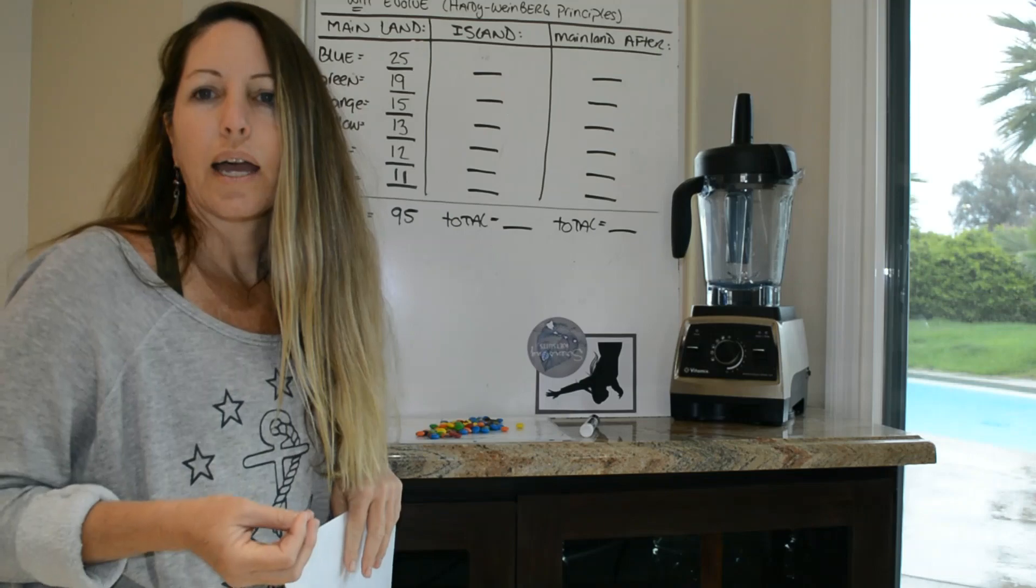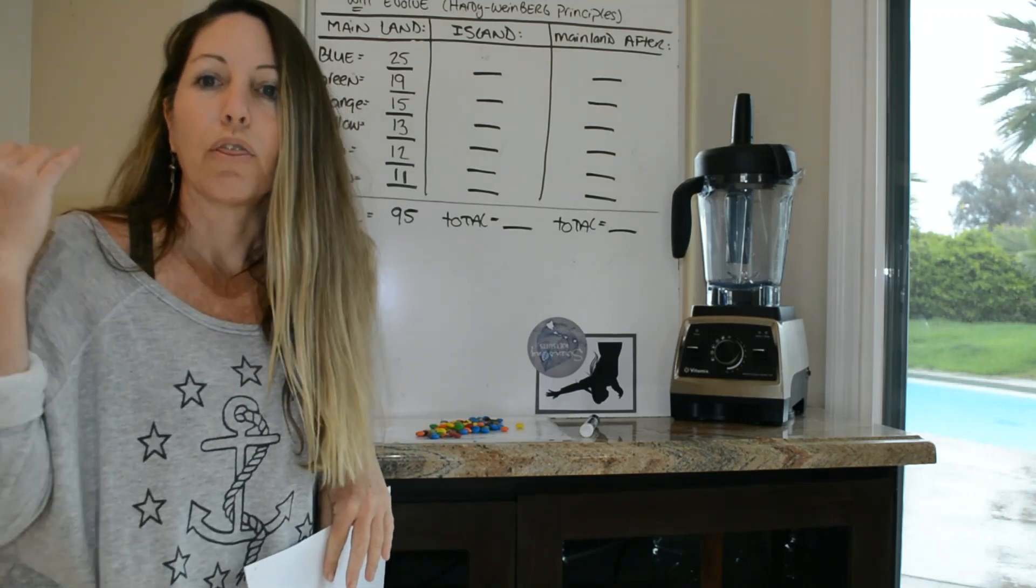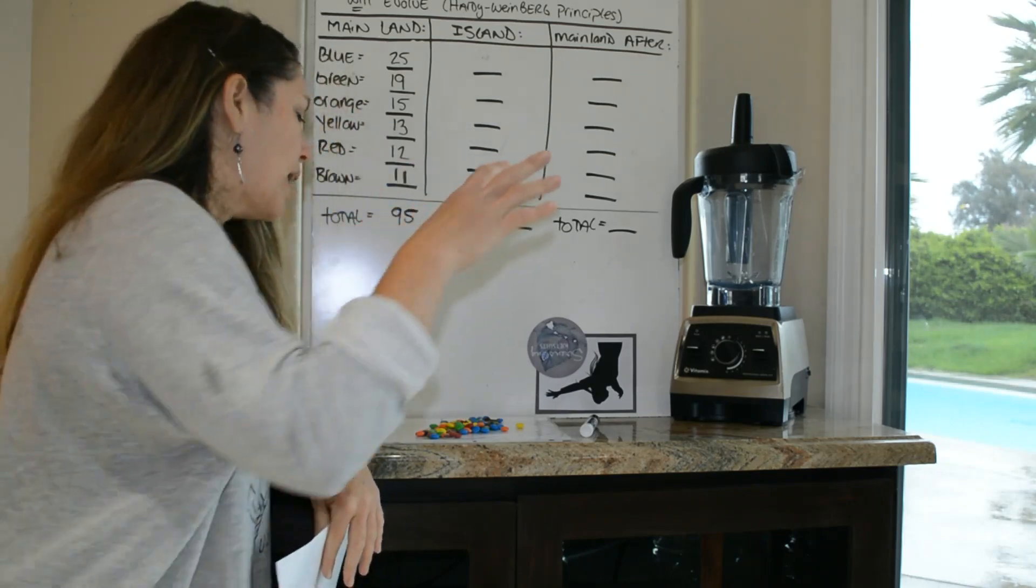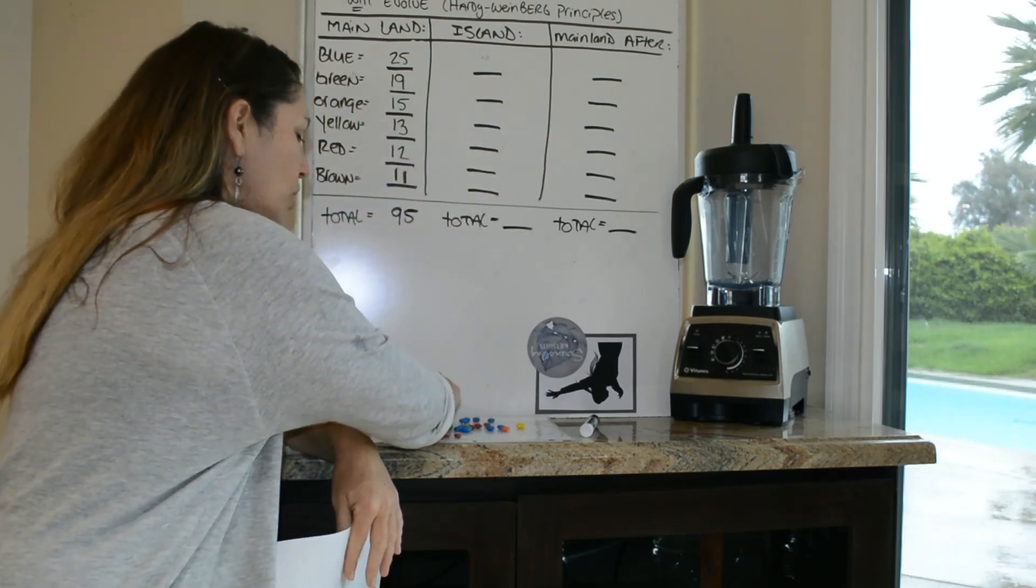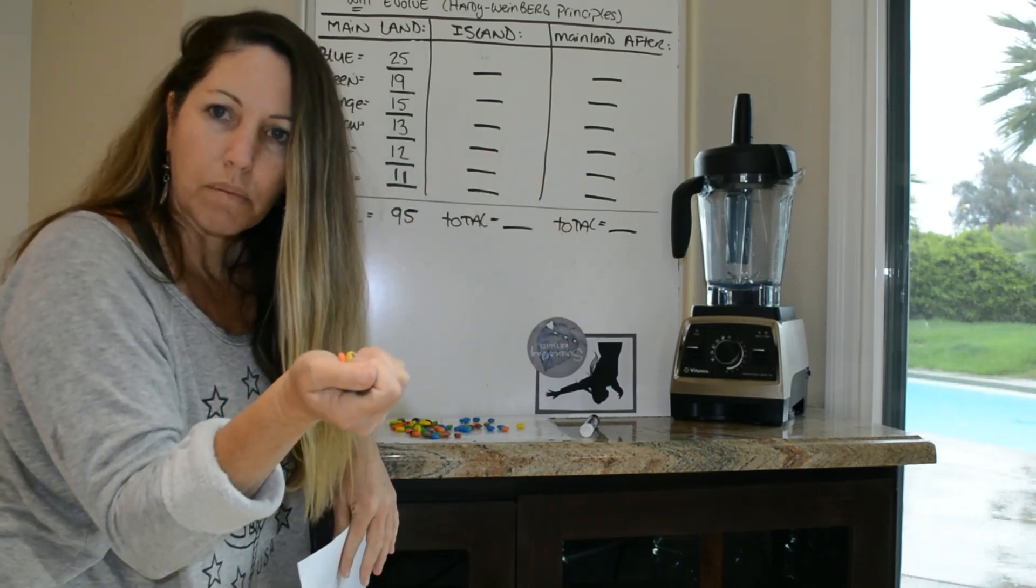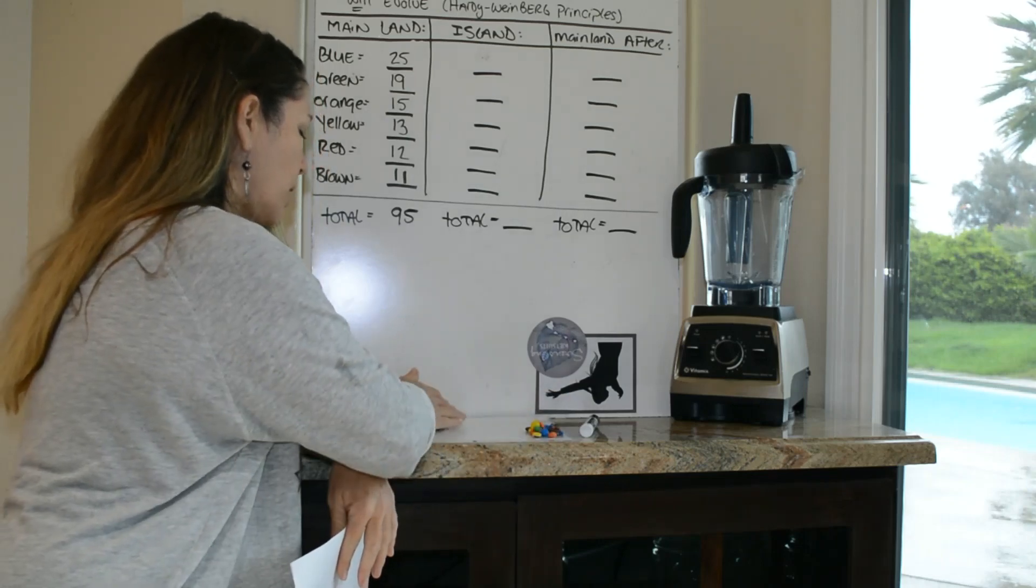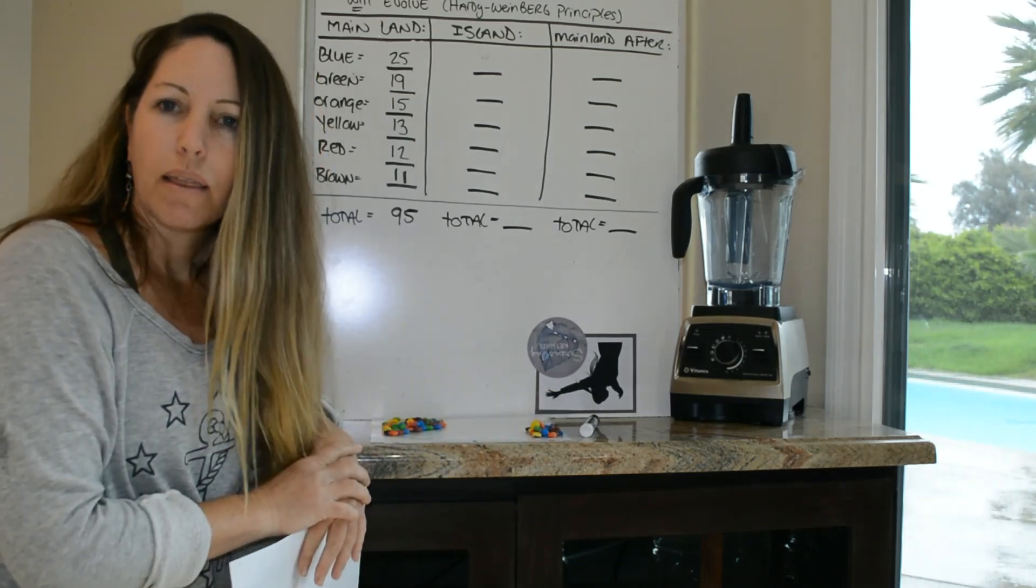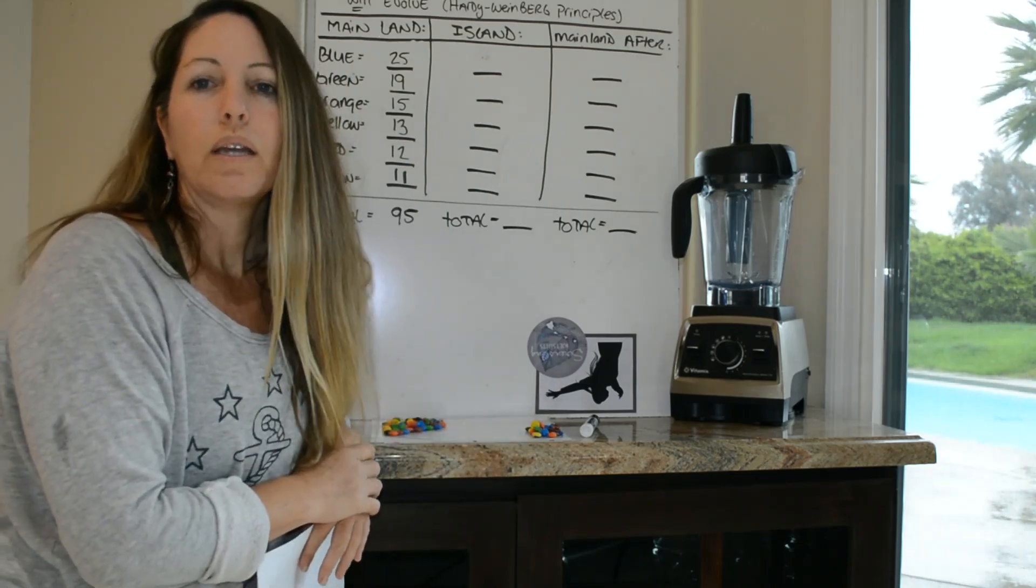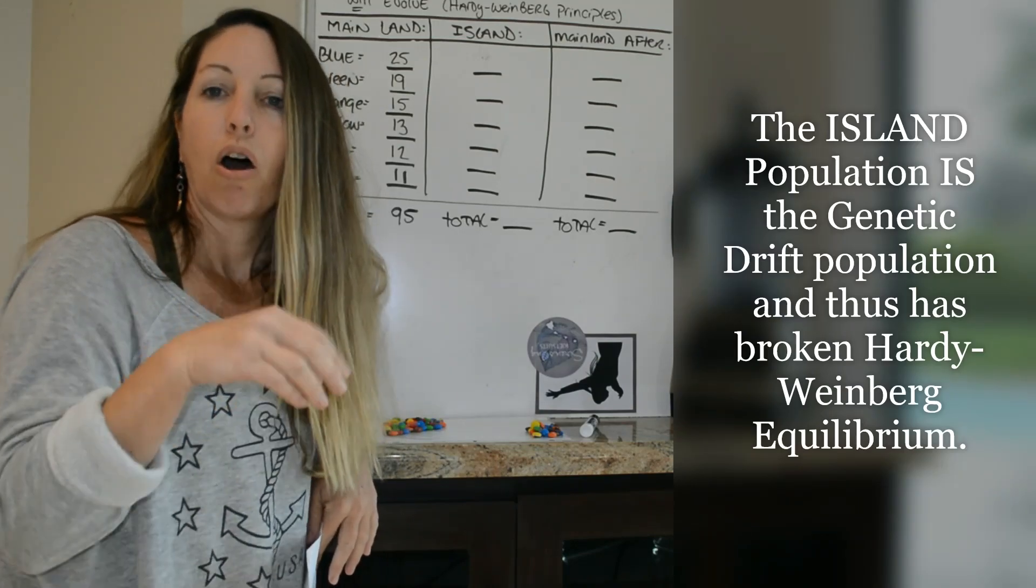So I, for example, am going to be the hurricane. So I'm going to come in with my big hand, and I'm going to grab just a handful of these specific organisms, and I'm going to drop them off over on this island over here on the side. So all of these guys remained on the mainland, and the ones on the island are the only genetics that will then be able to interbreed on the island.